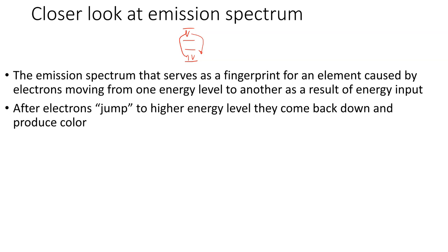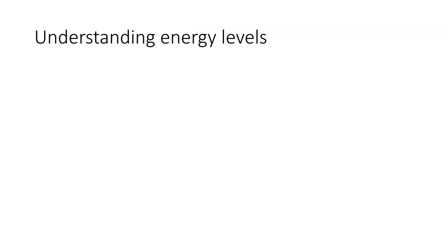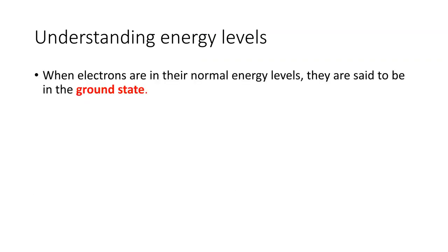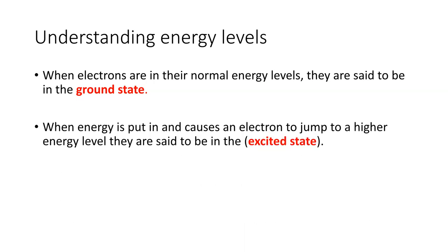When electrons are in their normal energy levels, they're said to be in the ground state. If you don't put energy into an electron, it stays in its ground state — that's the normal location for that electron in that element. For example, hydrogen has one electron in the first shell; helium has two electrons in the first shell; lithium has two in the first shell and one in the next shell. It keeps going as you add more electrons. That's the ground state.